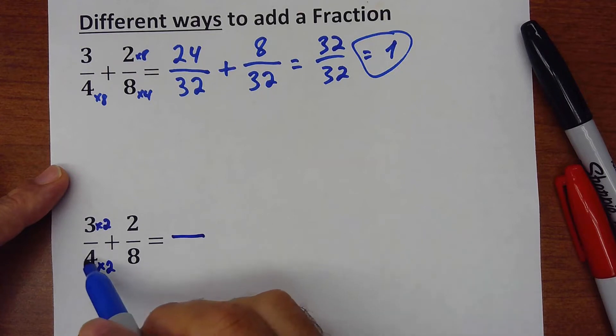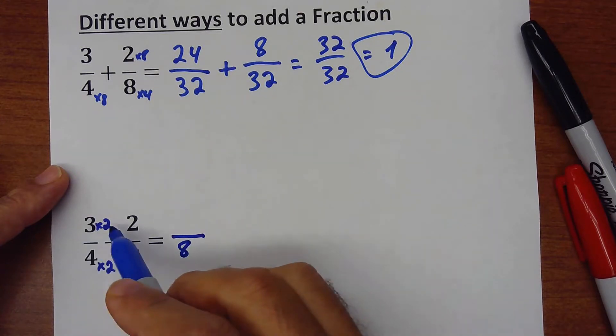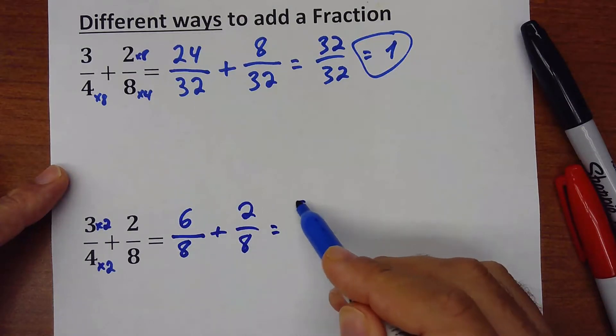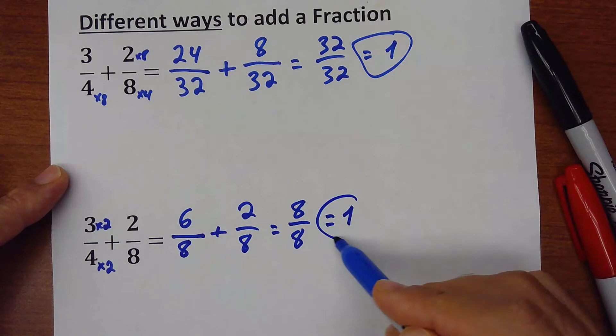So that becomes 4 times 2 is 8, 3 times 2 is 6, plus 2 over 8. That would be equals 8 over 8, and that would be equals 1.